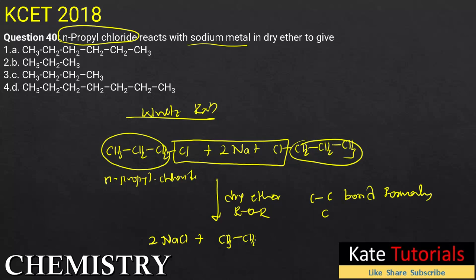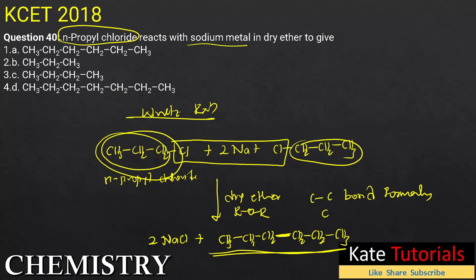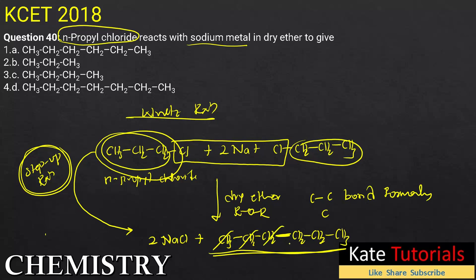So CH₃CH₂CH₂— bonds to —CH₂CH₂CH₃, giving a six-carbon chain. We started with n-propyl (3 carbons) and got a six-carbon open chain. We also call this a step-up reaction because it doubles the carbon chain length. The product is hexane. The answer is option A, hexane. Thank you.